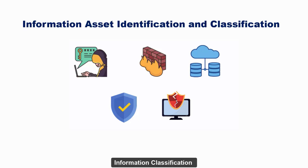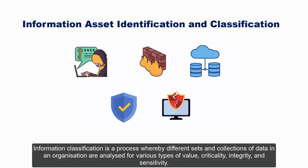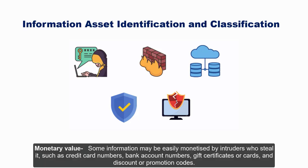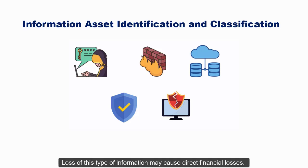Information classification is a process whereby different sets and collections of data in an organization are analyzed for various types of value, criticality, integrity, and sensitivity. Some information may be easily monetized by intruders who steal it, such as credit card numbers, bank account numbers, gift certificates or cards, and discount or promotion codes. Loss of this type of information may cause direct financial losses.